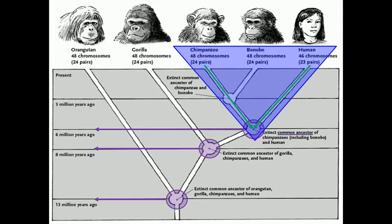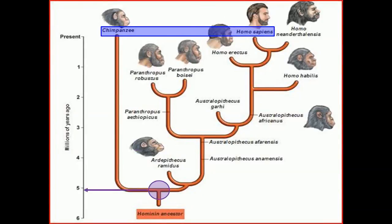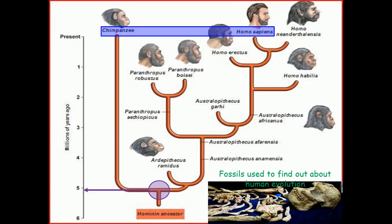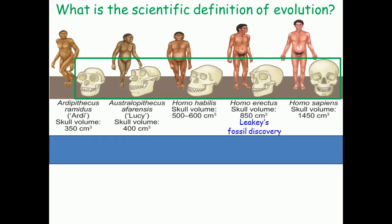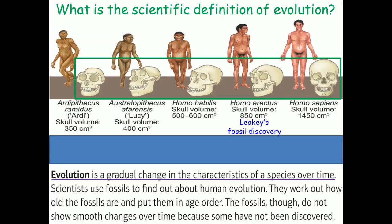Looking more closely between humans and chimpanzees, the common ancestor was roughly five to six million years ago. We can use fossils to find out about human evolution, and the ones you need to know for your exams are Ardi, Lucy, and Leakey's fossil discovery. If we look at the skulls of those organisms, we can see that there is a gradual change. Evolution is a gradual change in characteristics of a species over time, involving several different characteristics gradually changing and making the species different to each other.